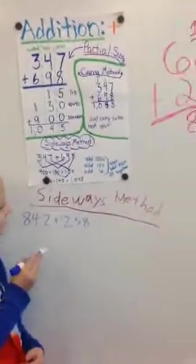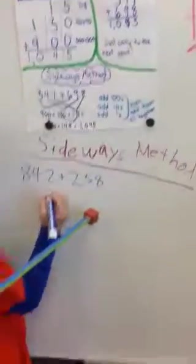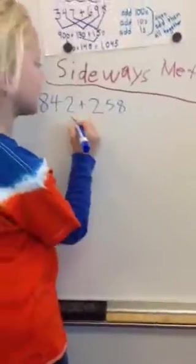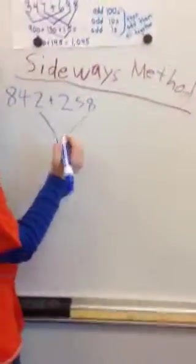I'm teaching the sideways method, and if you had 842 plus 258, you would add the 2 to the 8, and that makes 10.